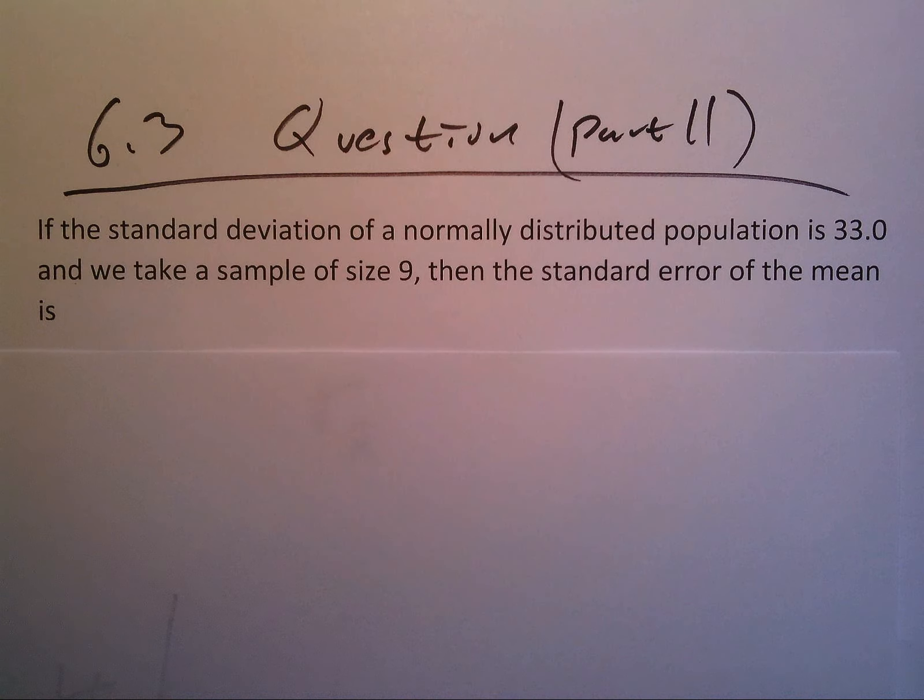Alright, this is 6.3 question part two. If the standard deviation of a normally distributed population is 33 and we take a sample of size 9, then the standard error of the mean is what? So the standard error is sigma sub x bar.